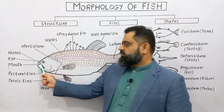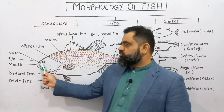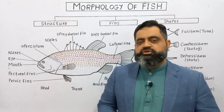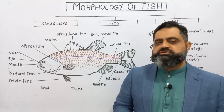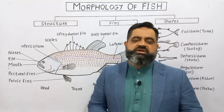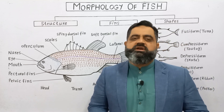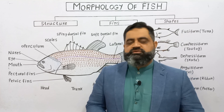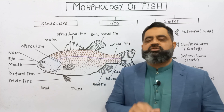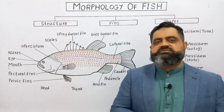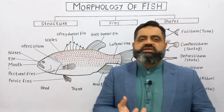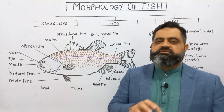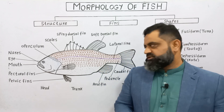Just on the dorsal side above the mouth, there are a pair of openings known as nares or nostrils. These nostrils are used for sensory purposes and are not used for breathing or respiration in most fishes. These nostrils have receptors which can receive chemical stimuli from the water and help the fish to navigate.